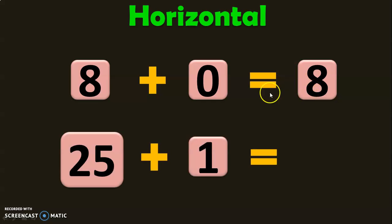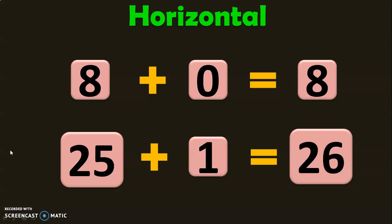From the next property of addition, we also learned that when 1 is added to any number, the answer will be the next number. So in this case, we have 25 plus 1. The next number after 25 is 26. So the answer for 25 plus 1 will be equal to 26.